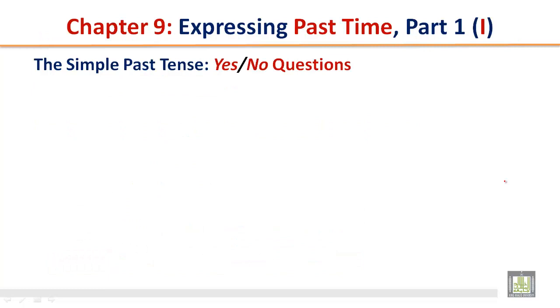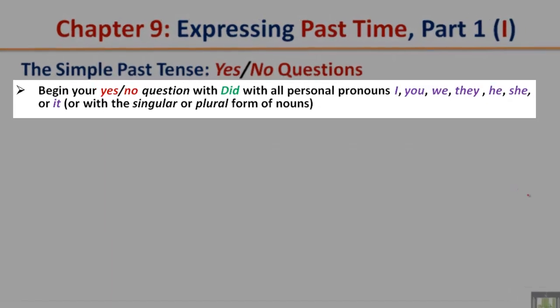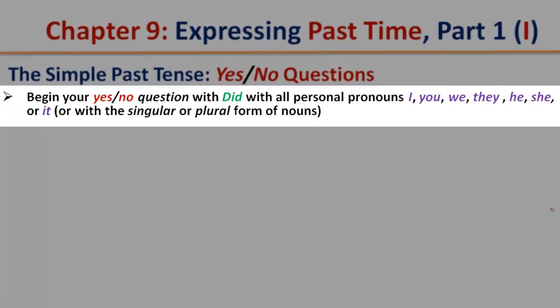The simple past tense, yes or no questions. Begin your yes or no question with did with all personal pronouns: I, you, we, they, he, she, or it, or with the singular or plural form of nouns.